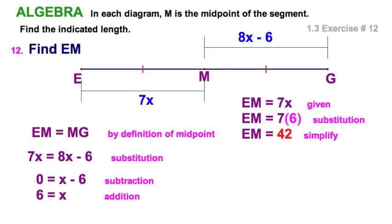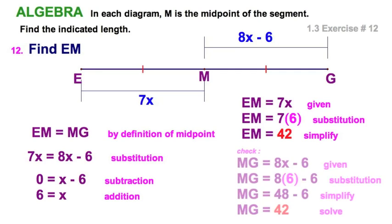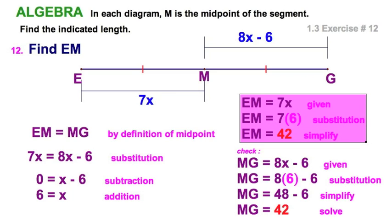But if this is in your interest to check, I would also substitute into here. Because now, if I find MG, I also come up with 42. That's helpful because if I came up with a different number, I think it would mean I made a mistake. But right now, that confirms. It's a nice little check for you. So, this is what you're looking for. EM is 42.